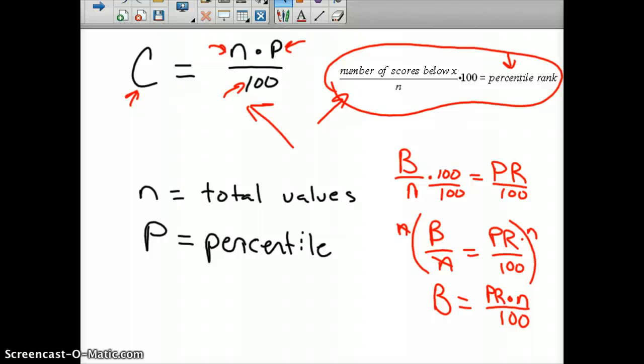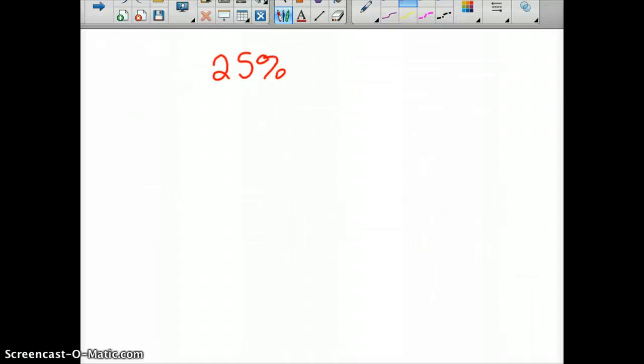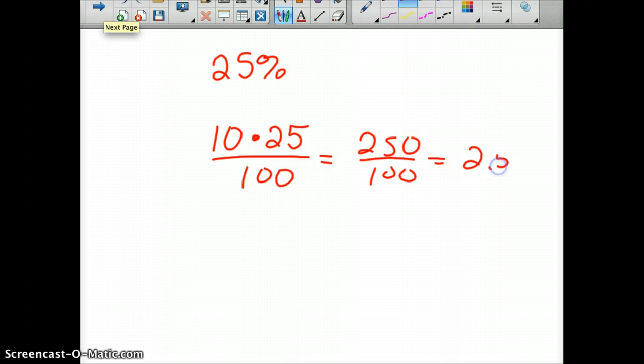Let's say we wanted to know the 25th percentile score in that data we had. So, to calculate that, again, here's our, we knew we had 10 scores. So, 10 times 25, our percentile rank, divided by 100, which would be 250 divided by 100, which is 2.5.